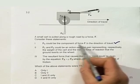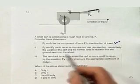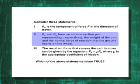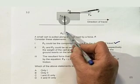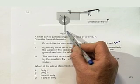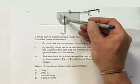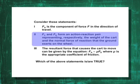Fc and Fd could be an action-reaction pair representing respectively the weight of the cart and the normal force. Okay, I know that I asked this question a little earlier—it's the same question—and I've asked it for a purpose. It is very important that you realize that these two things, Fc and Fd, action-reaction pairs being the weight of the cart and the normal force of reaction, that cannot be correct.